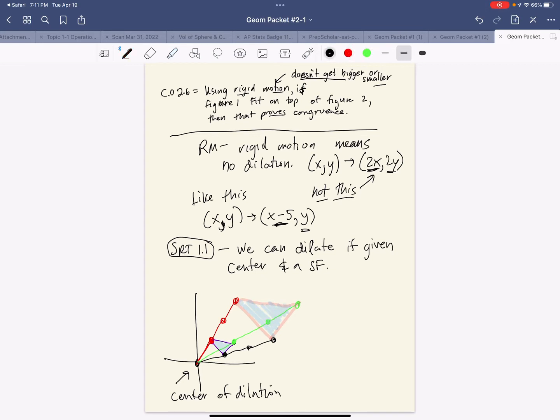The angles are the same. This angle matches this angle. This angle matches this angle. This third angle matches this third angle. And the sides make the same ratios. So if I had a measuring stick, this length is now three lengths longer. This length is now three lengths longer. This is what we mean when we say we can dilate if given a center and a scale factor.